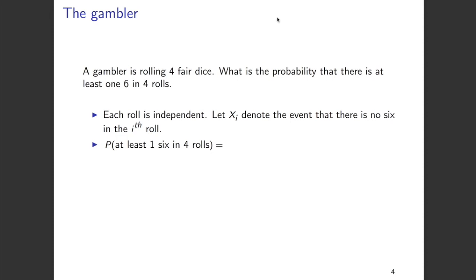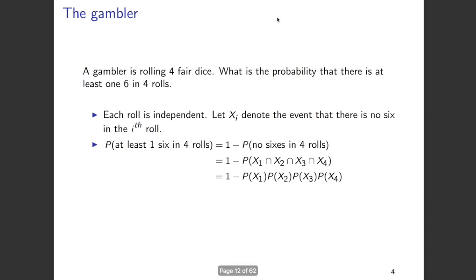We can rewrite this as one minus the probability that we get no sixes in the four rolls. So to find the probability of at least one six, we find the probability of no sixes and subtract from one. We rewrite this as one minus the probability of X1 intersection X2 intersection X3 intersection X4. Since all the Xi's are independent of each other, we can rewrite this as one minus the probability of X1 times the probability of X2 times the probability of X3 times the probability of X4.